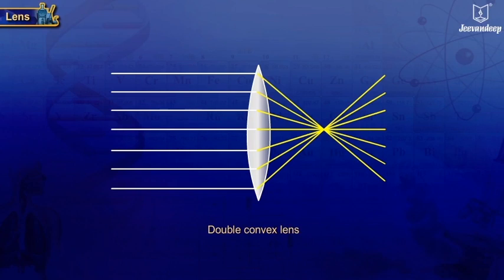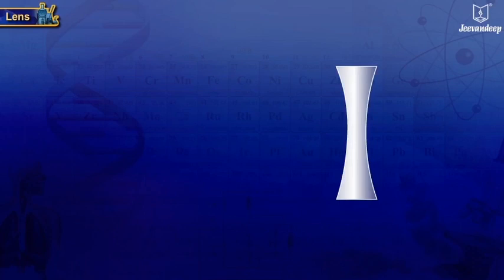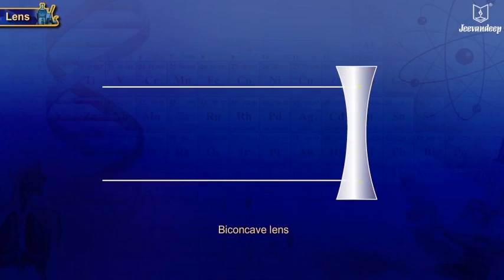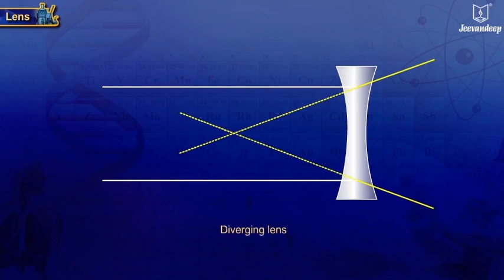A lens having both surfaces curved inwards is called a concave lens, or a double concave lens, or biconcave lens. It is thicker at the edges than at the middle. This lens can diverge light rays incident on it, so it is a diverging lens.